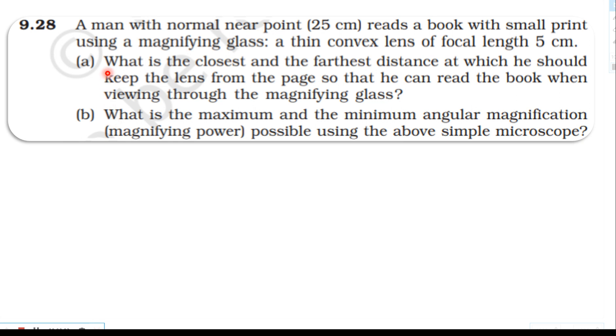From the topic ray optics and optical instruments, problem 9.28. A man with normal near point 25 centimeter reads a book with small print using a magnifying glass, a thin convex lens of focal length 5 centimeter. First question: what is the closest and the farthest distance at which he should keep the lens from the page so that he can read the book when viewing through the magnifying glass?